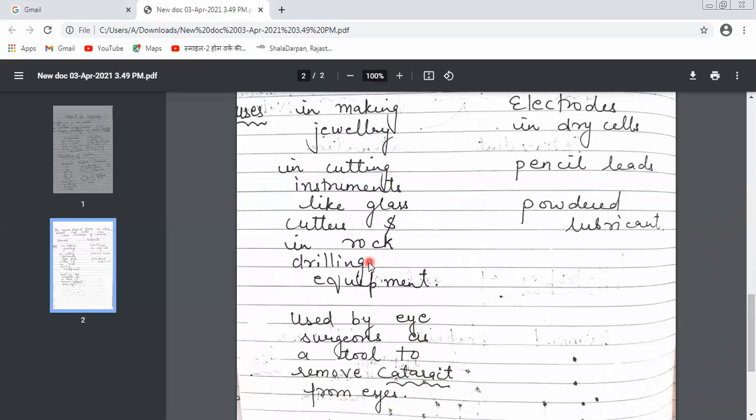What is a cataract? When the eye lens is foggy, a layer comes in front of the eyes.